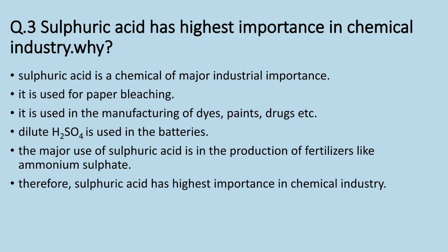Question three: why does sulfuric acid have the highest importance in the chemical industry? Answer: sulfuric acid is a chemical of major industrial importance. It is used for paper bleaching, and in the manufacturing of dyes, paints, and drugs. Dilute H2SO4 is used in batteries. Its major use is in the production of fertilizers like ammonium sulfate. Therefore, sulfuric acid has the highest importance in the chemical industry.